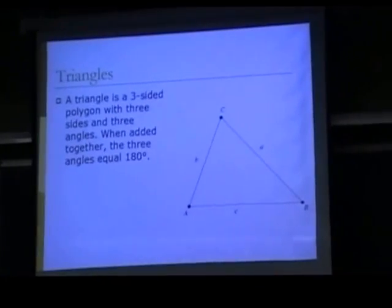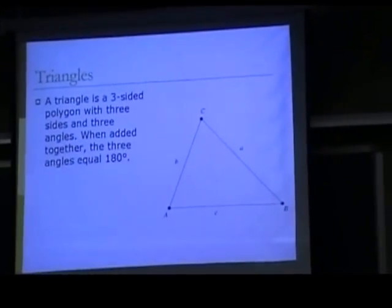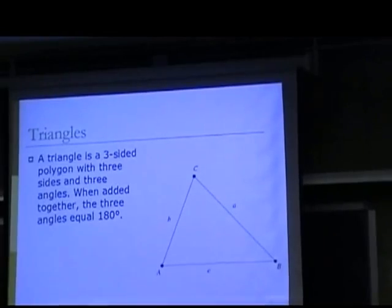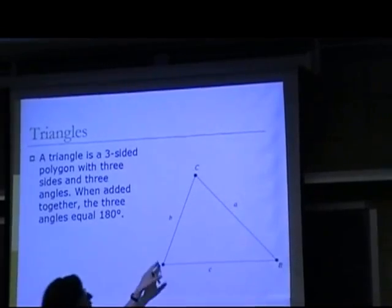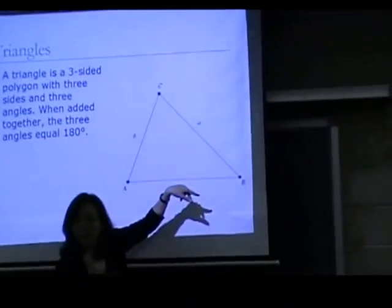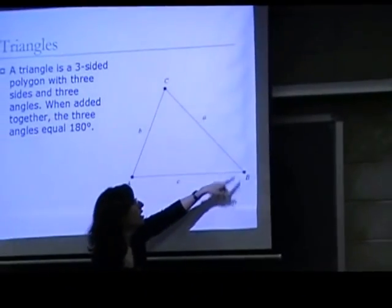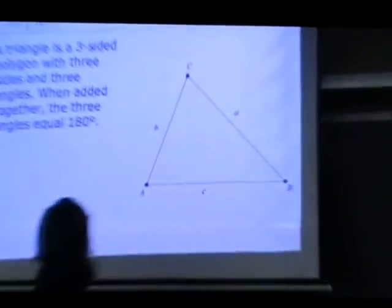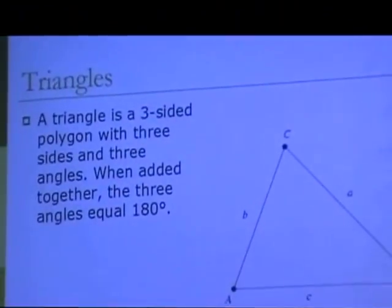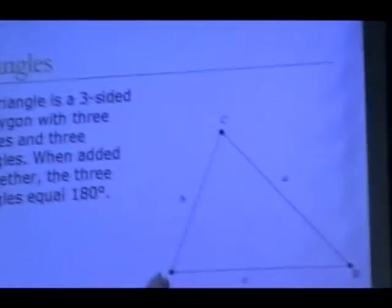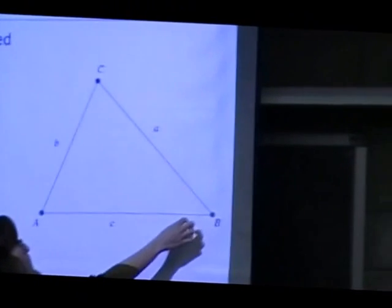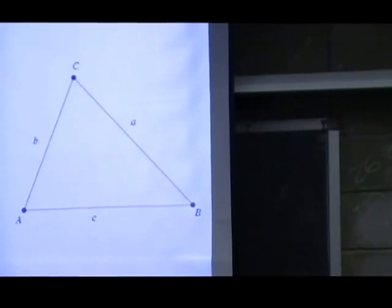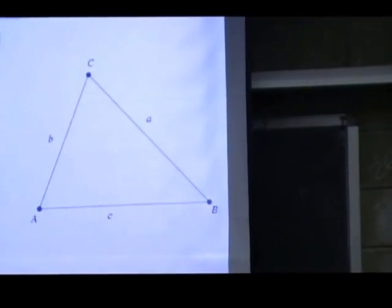First, the definition of a triangle. You know that a triangle is a figure with three sides and three angles. And if we sum the value of the three angles, we get 180 degrees.